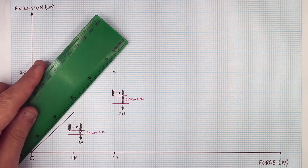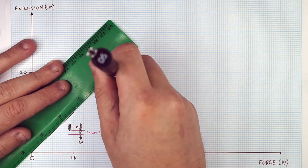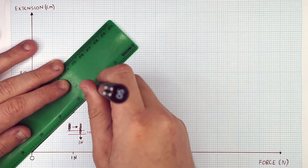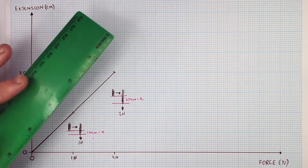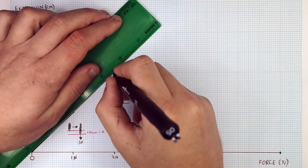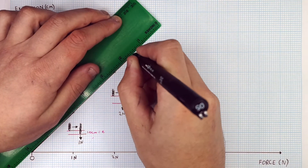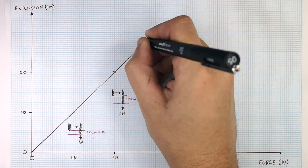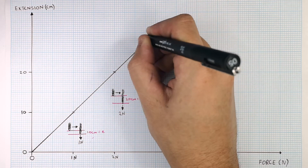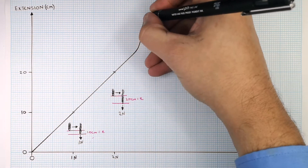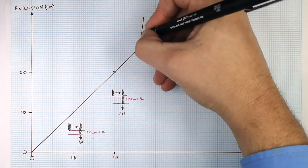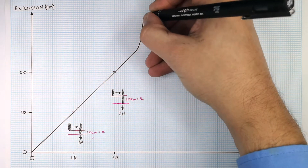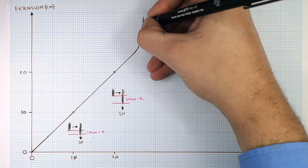As you can see here, the force applied to the spring is directly proportional to the extension of the spring until we reach this point here. This point is the limit of proportionality — the maximum force that can be applied before the extension stops being proportional to the force.